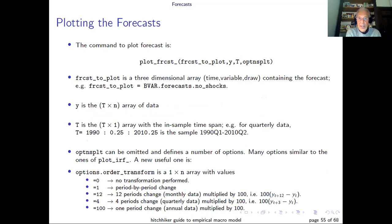This is a command to plot the forecast, which is plot_forecast, and it takes as input the matrix containing the forecast. For example, BVAR_forecast_no_shocks, the data Y, the time period T which is the array, and then the options. Now, the options are useful if you want to present the forecast in units which are not the ones you are estimating the model with. For example, you may want to present forecasting growth rates, and growth rates could be calculated with one period change, four period change, or 12 period change if you have monthly data. So you have to specify the option order_transform equal to one of these if you want to change the forecast.